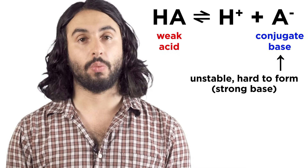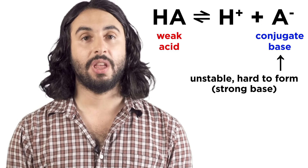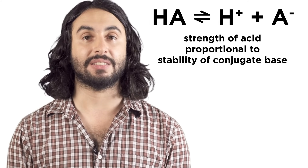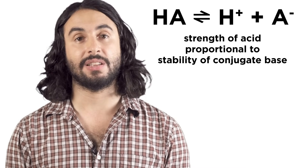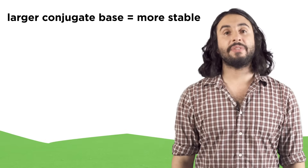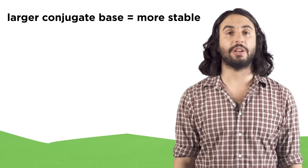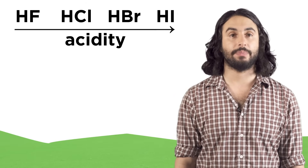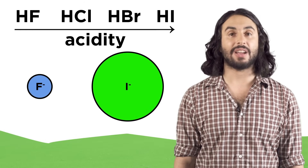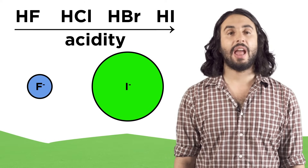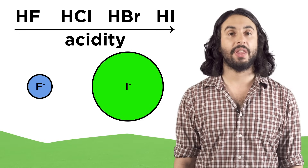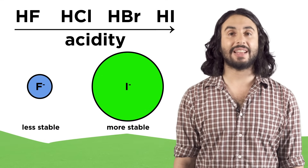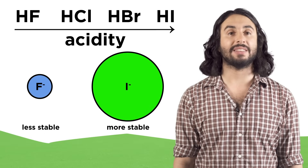A weak acid — something that isn't very willing to lose a proton — will have a strong conjugate base, something that will very easily gain a proton. So if the strength of an acid is proportional to the stability of the conjugate base, we have to be able to predict the stability of conjugate bases in order to tell how strong an acid will be. Whichever atom is losing a proton, the larger it is, the more stable the conjugate base will be. Comparing the acids made by combining hydrogen with a halogen, we can see that HI is the strongest. This is because when the proton leaves we are left with an iodide ion, which is much larger than a fluoride ion and therefore can diffuse the negative charge around a greater volume, thereby stabilizing itself. Fluoride is much smaller with a very localized charge and is therefore less stable, so hydrofluoric acid is a much weaker acid than hydroiodic acid.